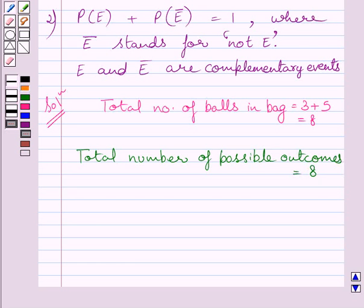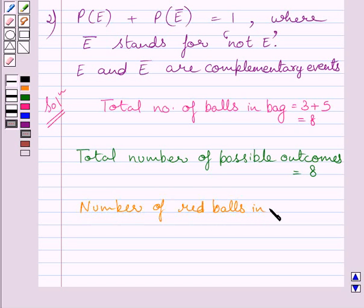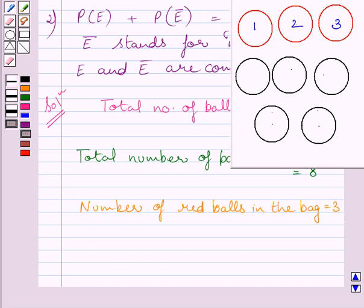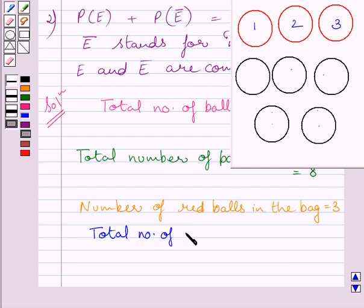We are given in the question that a ball is drawn at random from the bag and we are required to find the probability of getting a red ball. We know number of red balls in the bag is equal to 3. One red ball can be drawn in 3 ways. Clearly, we can see in the figure these are 3 red balls — the ball drawn at random can be this ball, this ball, or this ball. So there are 3 ways in which a red ball can be drawn, and total number of favorable outcomes is equal to 3.